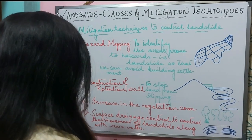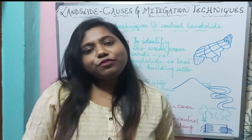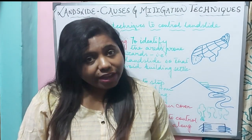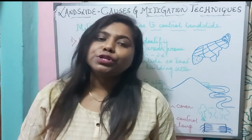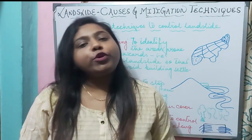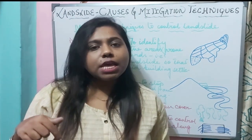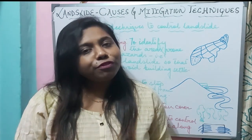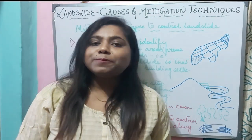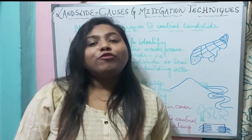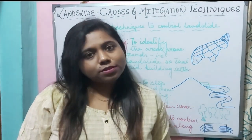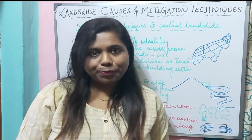So the mitigation techniques are: hazard mapping, construction of retention walls, increase in vegetation cover, and surface drainage control. In this video we understood the definition of landslide, the causes, effects, and mitigation techniques to control landslide. In the description box you will find a PDF with notes on this chapter. If you like the content, don't forget to hit the like button, subscribe to the channel, and click the bell button for notifications. Read your NCERT books, stay at home, and stay safe. Until then, signing off — thank you.